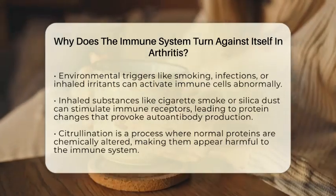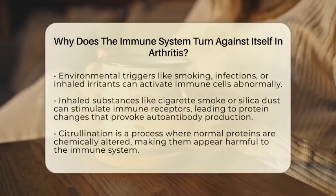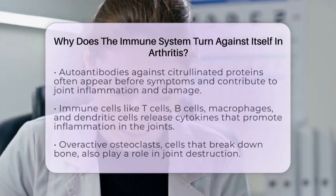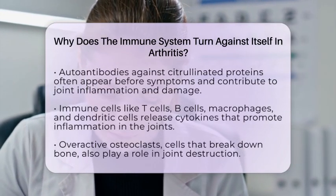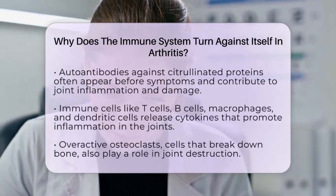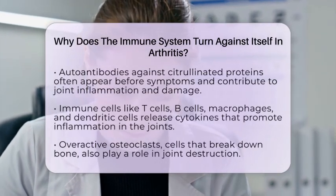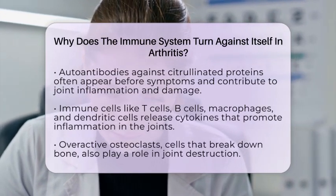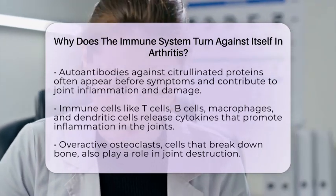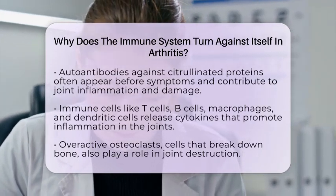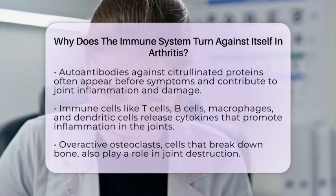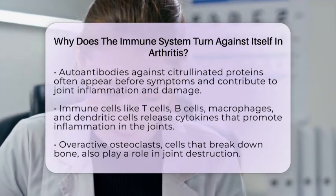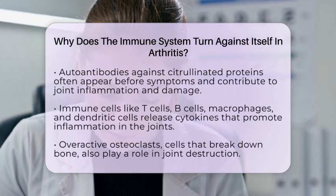A key process involved is called citrullination, where normal proteins are chemically altered. These citrullinated proteins can be mistaken as harmful by the immune system, prompting the production of anti-citrullinated protein antibodies. These autoantibodies are often present before symptoms appear and help drive joint inflammation and damage.